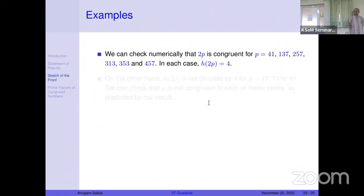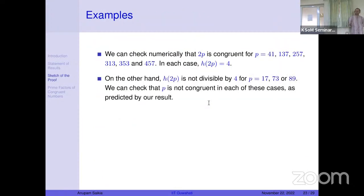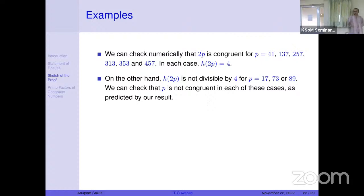We can check: for example, the primes 17, 73, or 89 have h(−2p) not divisible by 4, so our result confirms they are not congruent, which is also verifiable by other means. Thus by looking at divisibility conditions of the class number we can determine whether these numbers are non-congruent.